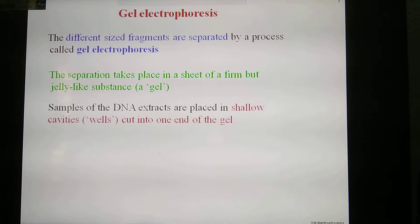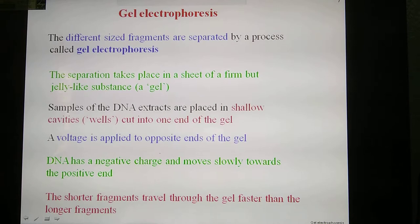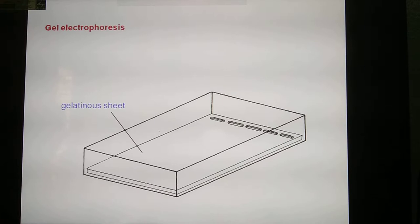The voltage is applied to the opposite ends of the gel. DNA has a negative charge, so negatively charged DNA moves slowly towards the positive electrode. The shorter fragments travel through the gel faster than the larger ones.